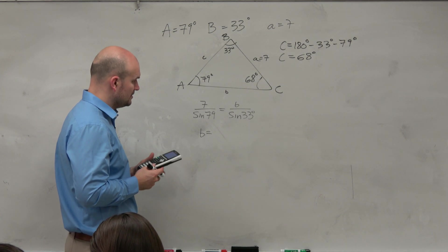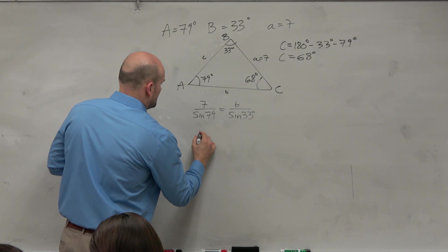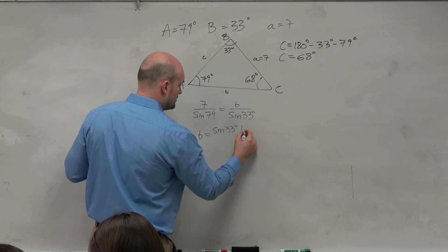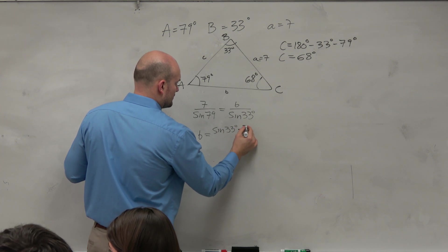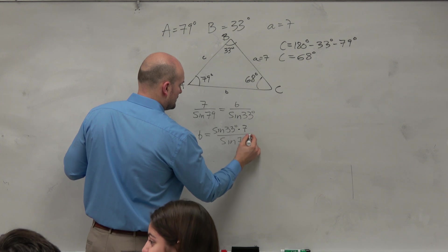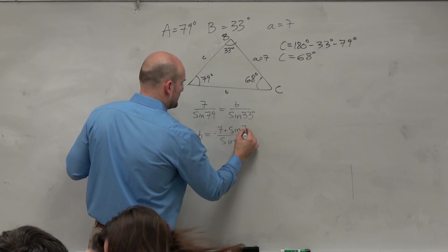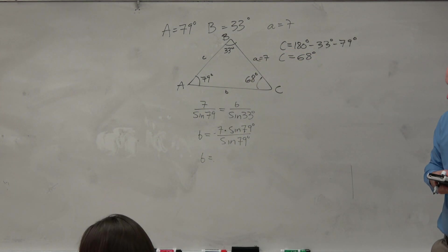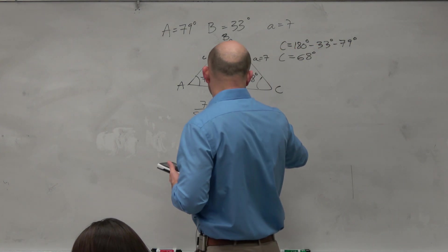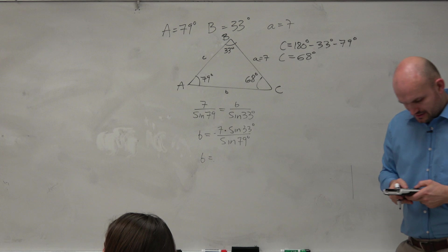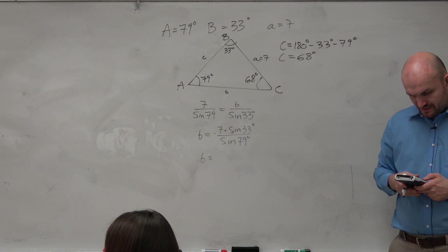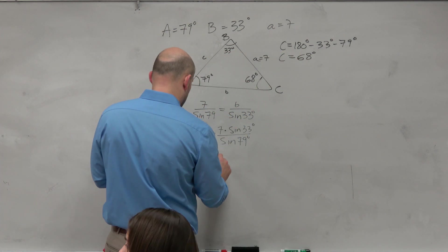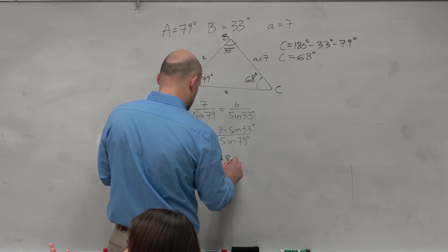So in this one, let me show you the work here real quick. So to solve for B, I need to multiply by the sine of 33 degrees. You don't need to show this equation. So make sure your calculator is in degree mode. And then we'll do 7 times the sine of 33 divided by the sine of 79. And I get 3.8838, right? So if I was going to round to the nearest thousandth, I would say B equals 3.884.